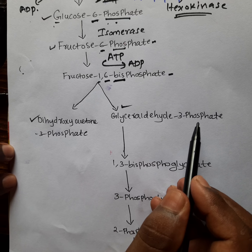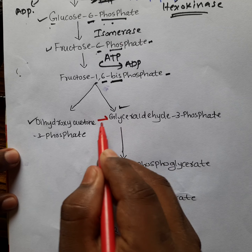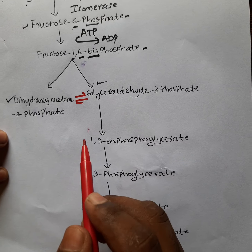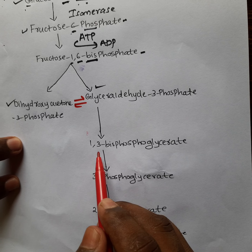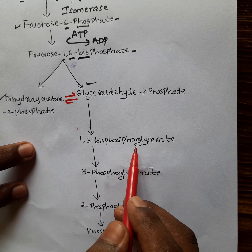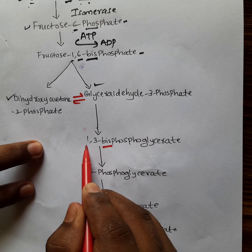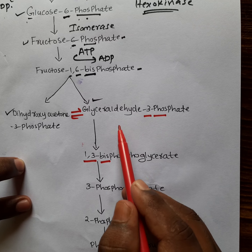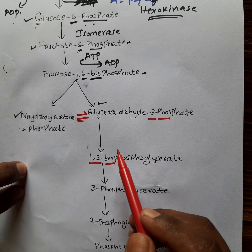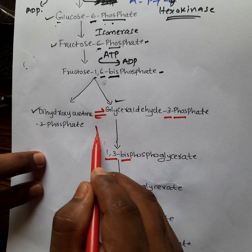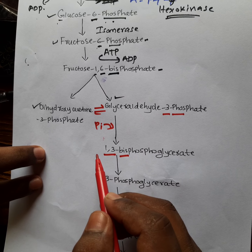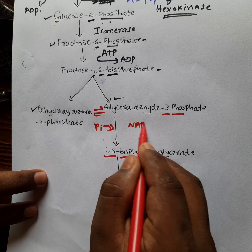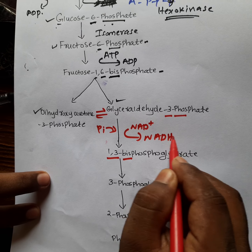After that, fructose 1,6-bisphosphate divides into two compounds: dihydroxyacetone phosphate (DHAP) and glyceraldehyde 3-phosphate (G3P). These two compounds are interconvertible. Taking glyceraldehyde 3-phosphate next: it converts into 1,3-bisphosphoglycerate. In 1,3-bisphosphoglycerate there are two phosphate groups at the first and third positions, while G3P has only one phosphate at the third position.